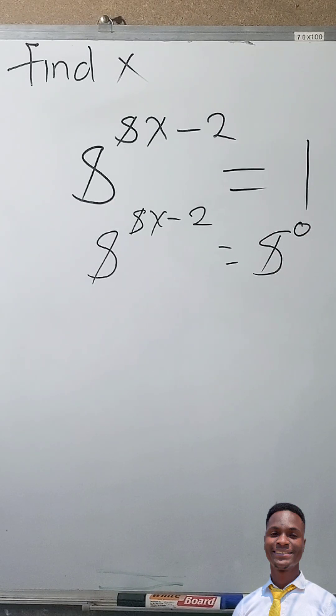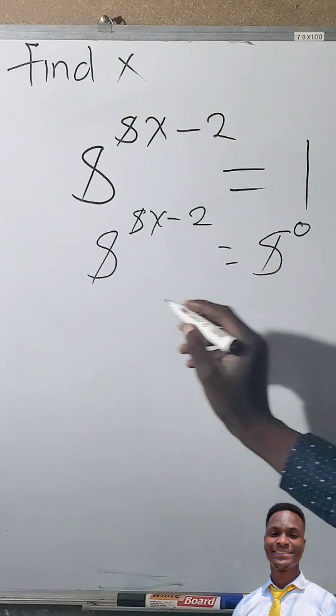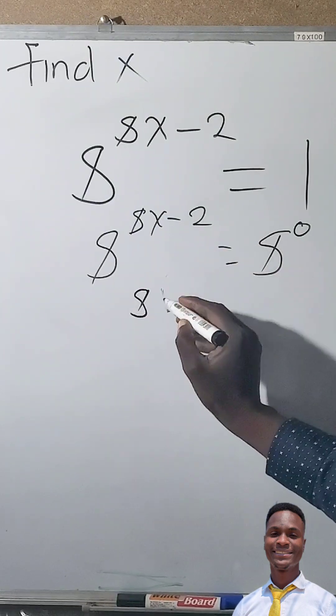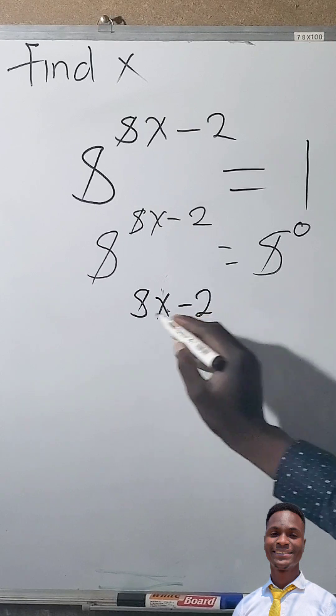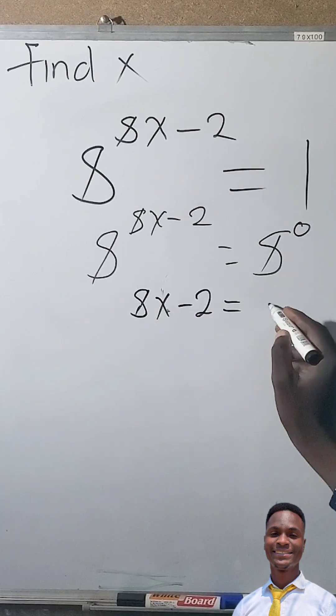Remember, anything raised to the power 0 is 1. So just get the powers since bases are the same. Then we'll say 8x minus 2 is equals to 0.